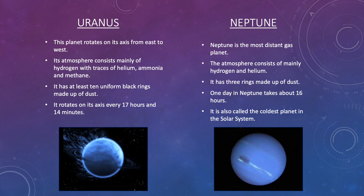Neptune is the most distant gas planet. Its atmosphere consists mainly of hydrogen and helium. It has three rings made up of dust. One day on Neptune takes about 16 hours. It is also called the coldest planet in the solar system.